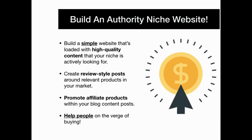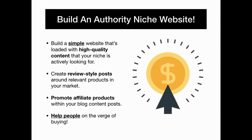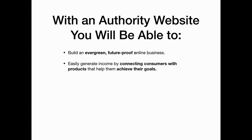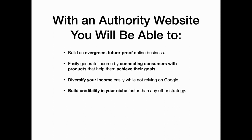Get started right away by building an authority niche website. Build a simple website loaded with high quality content that your niche is actively looking for, then create review style posts around relevant products in your market and promote affiliate products within your blog content. Help people on the verge of buying. With an authority website you'll be able to build an evergreen, future-proof online business, easily generate income by connecting consumers with products that help them achieve their goals, and diversify your income easily while never relying on Google.